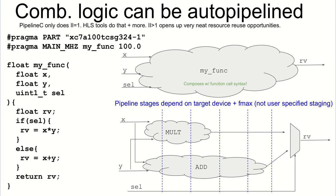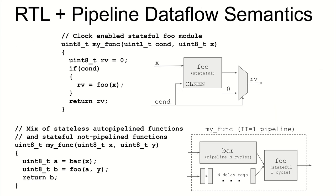Now onto the feature that Pipeline C was created for: automatic pipelining. Sections of combinatorial logic can be automatically pipelined to an initiation interval of one at arbitrary F-max targets — anything the device can actually achieve. The device-specific timing feedback from the last slide is used internally to drive all the pipelining. All of this still composes with function call syntax, just like combinatorial logic did earlier.